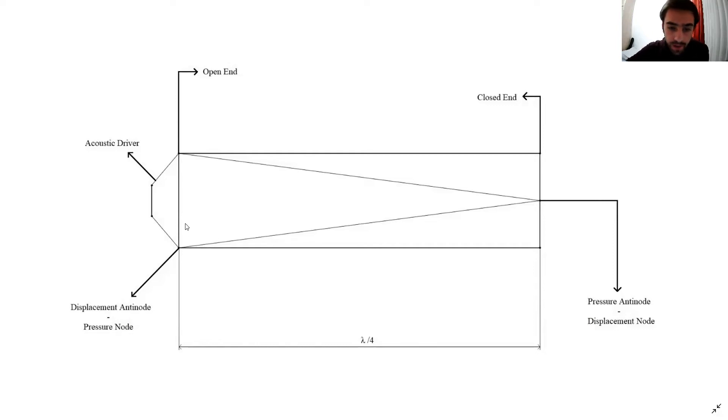The pressure wave is opposite of the displacement wave. We have a pressure antinode at the closed end and a pressure node at the open end.